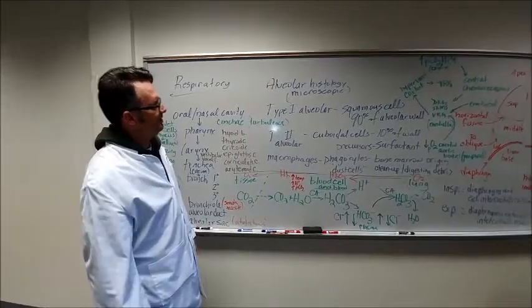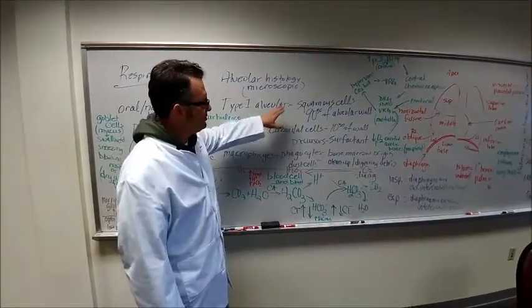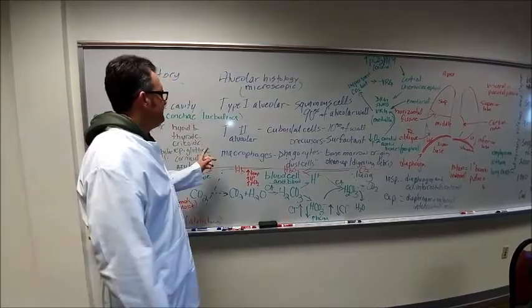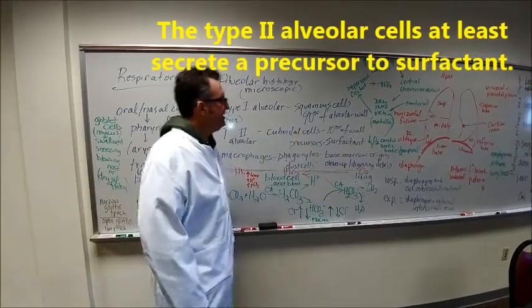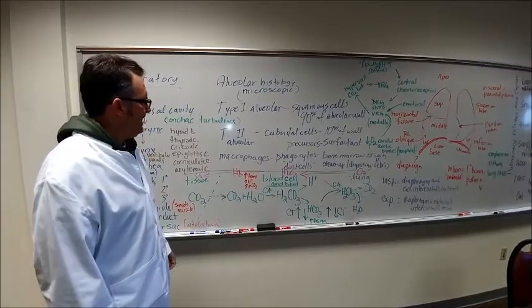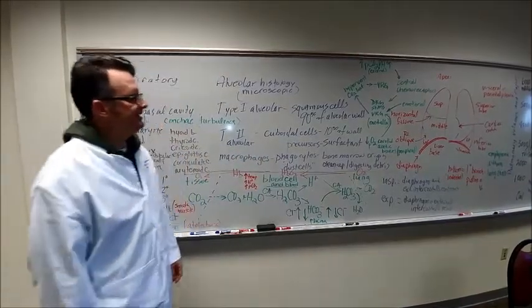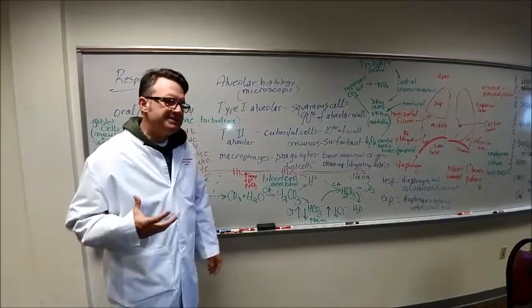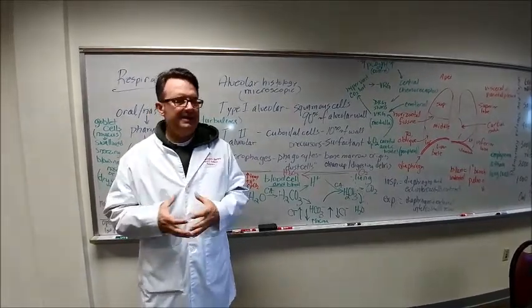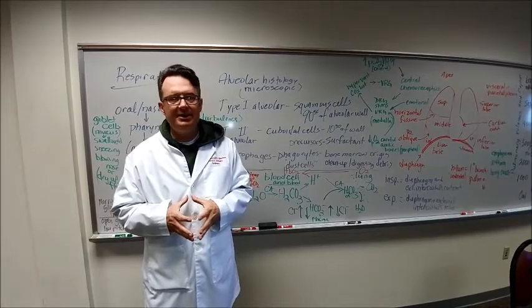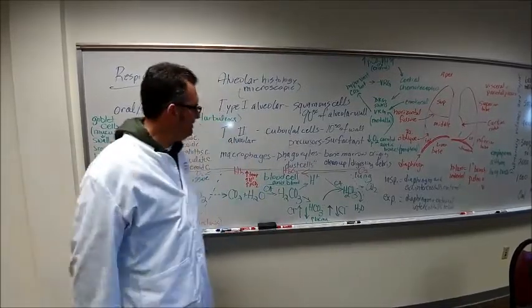Let's go down to the microscopic level just for a moment when we talk about alveolar histology. The type 1 alveolar cells are squamous cells. They make up 90 percent of the alveolar wall. Type 2 alveolar cells are the ones that secrete surfactant. These are cuboidal in shape. About 10 percent of the alveolar wall is type 2 alveolar cells. Macrophages are dust cells and these go around cleaning up and digesting and taking out debris. Kind of interesting to me how our lungs from top to bottom, there's kind of a gravity feed thing going there. It's really nice that we have the ability to cough to get some of this trash up and out of our lungs.